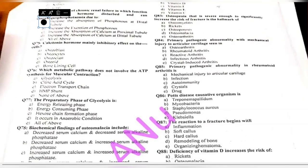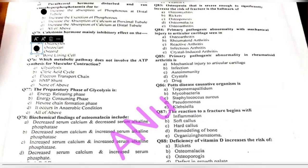Question 75: calcitonin hormone has a mainly inhibitory effect on which cells — osteoplasts, osteocytes, osteoclasts, osteoid, or bone lining cells? Calcitonin basically inhibits the osteoclast cells.